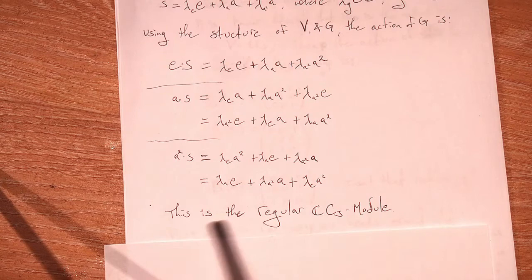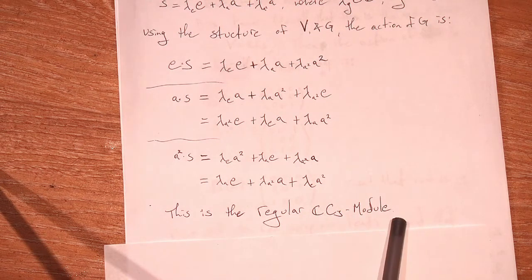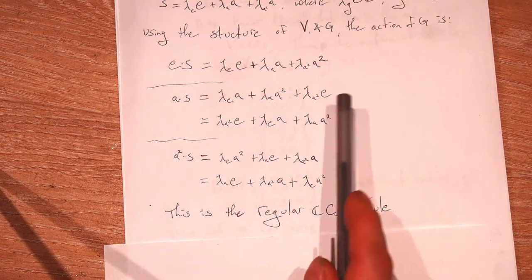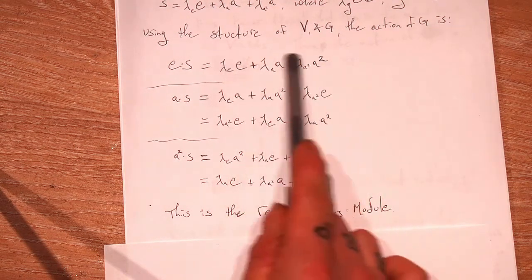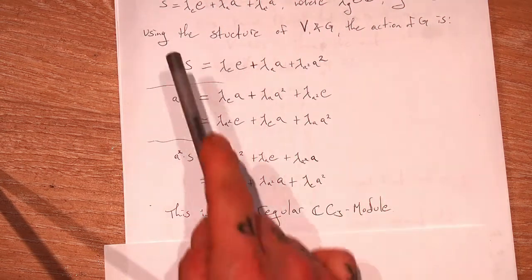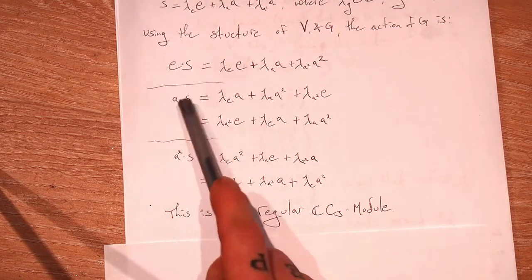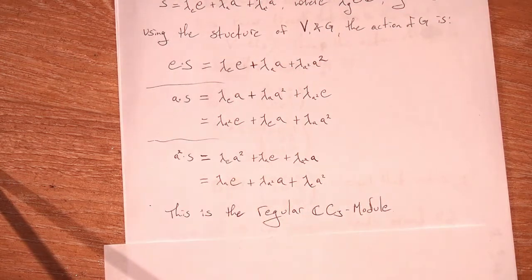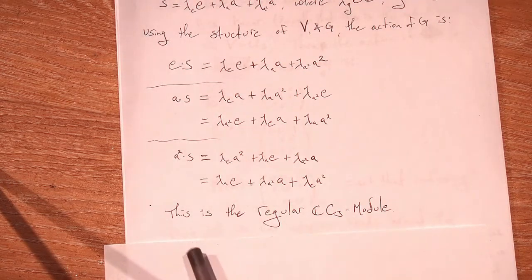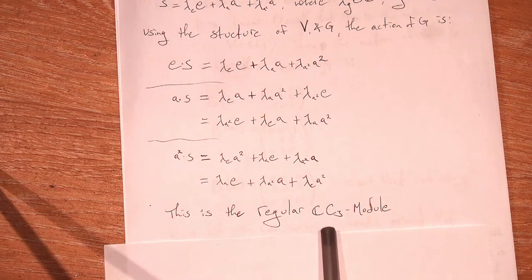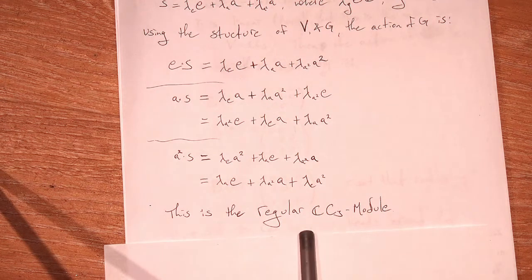So all of this information gives us the regular CC3 module. We have elements of our vector space, we know they look like this, and we know how the group acts on our vector space. So we have a group action and a vector space — that gives us an FG module. In this case, the regular CC3 module.